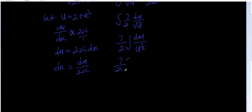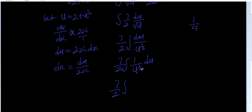You have integral of 1 over u to the half, so you have 7 over 2 times integral of 1 over u raised to power half. Using indices, 1 over a raised to power x equals a raised to power negative x, so this becomes u raised to power negative half du.